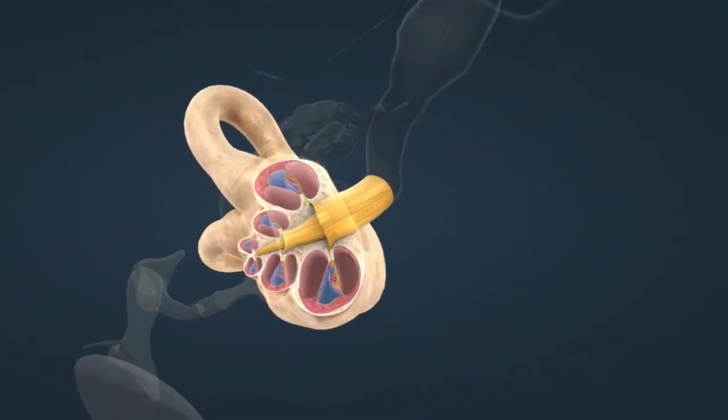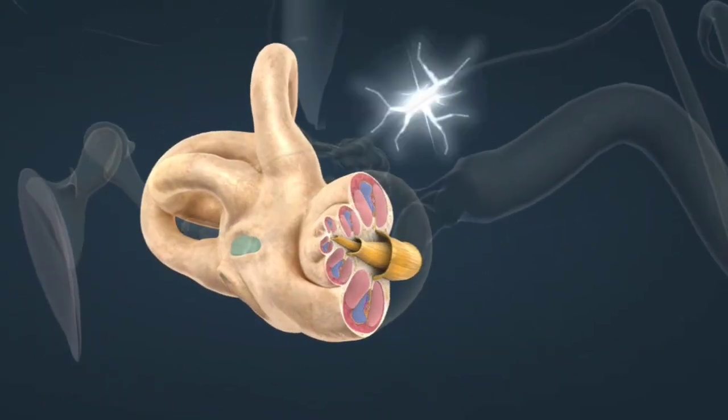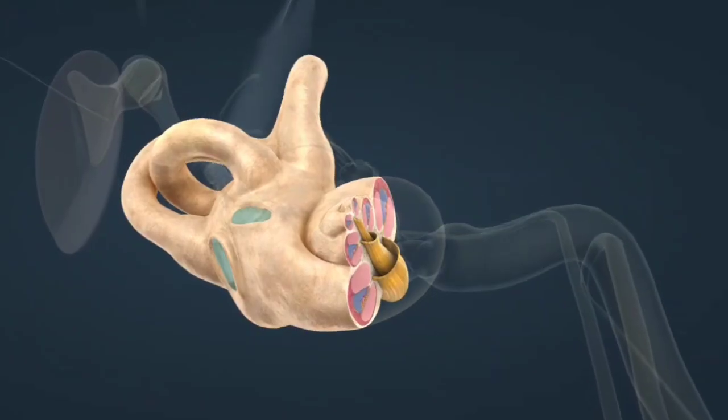Stapes (stirrup) connects to the oval window of the cochlea and amplifies the vibrations.